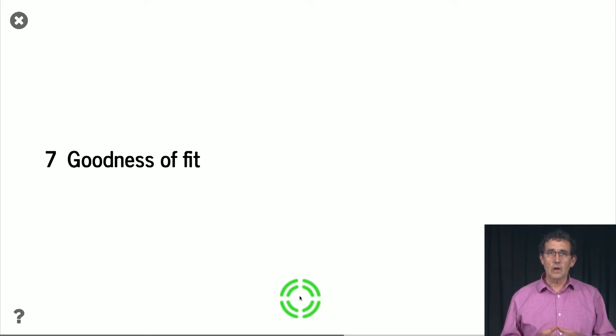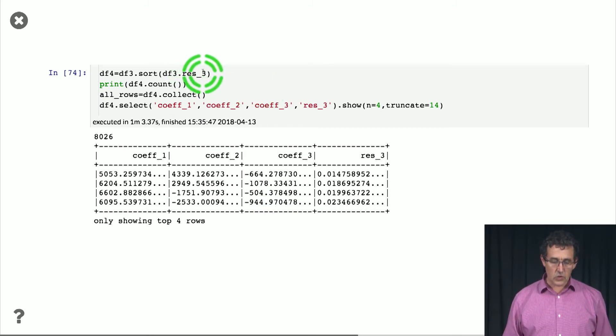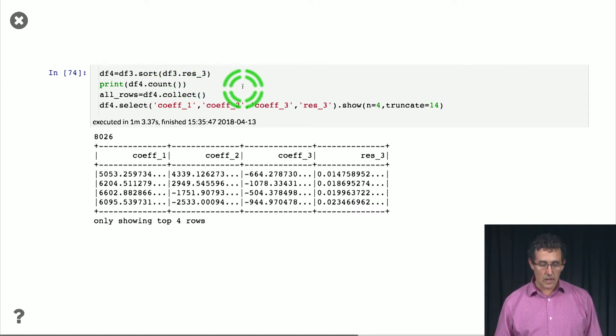But this is all if the things fit, if the data fits our model well. And the other thing that we often want to do is we want to actually check this goodness of fit. So we're going to basically say, how well do the first three components represent the data? How well do they approximate the data? And we're going to sort according to that. So this is what we're doing here. We're basically just sorting according to the residual three. So we're not here doing a threshold on the residual. We're just sorting according to it. And then we're showing here what are the three coefficients and what is the residual.